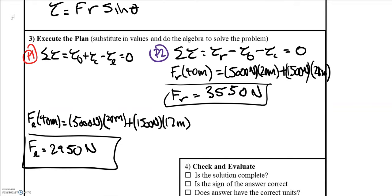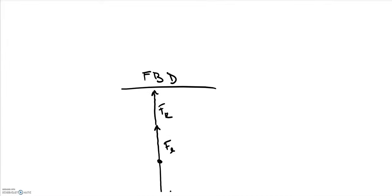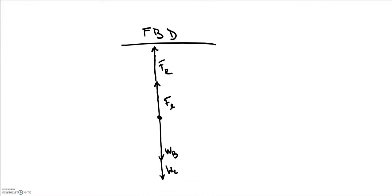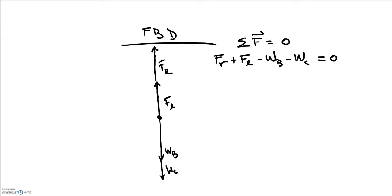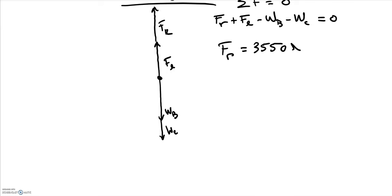Alternatively, if we only chose one pivot point — pivot point 1 on the right side — we know the force due to the left side from that equation and can use Newton's second law to solve for the right support force. The sum of forces must equal zero in equilibrium: the force by the right support plus the force by the left support minus the weight of the bridge minus the weight of the car equals zero. You find the same result: the right-side support force is 3,550 newtons.